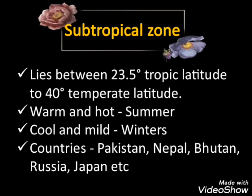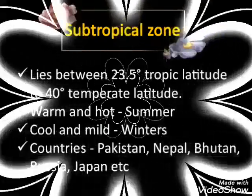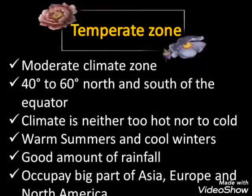The subtropical zone lies between 23.5 degree tropic latitude to 40 degree temperate latitude. It is characterized by warm and hot summers and cool to mild winters with infrequent frost. Countries in the subtropical zone include Pakistan, Nepal, Bhutan, Russia, and Japan.